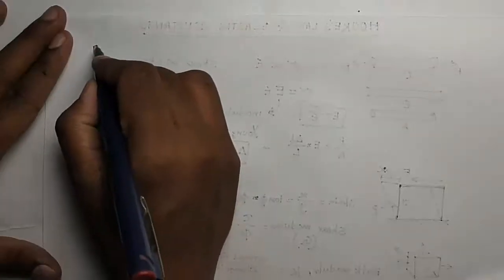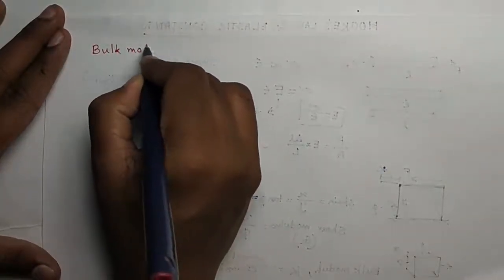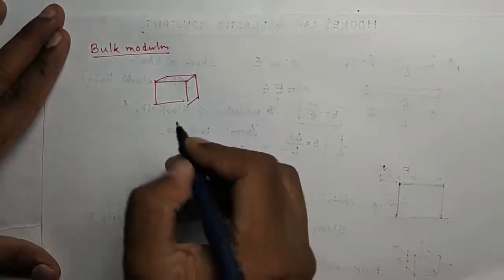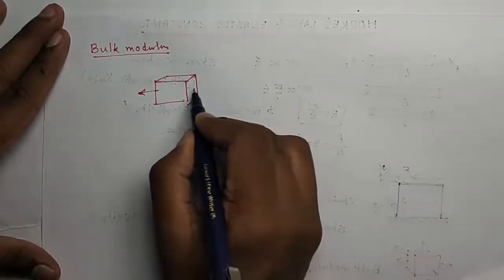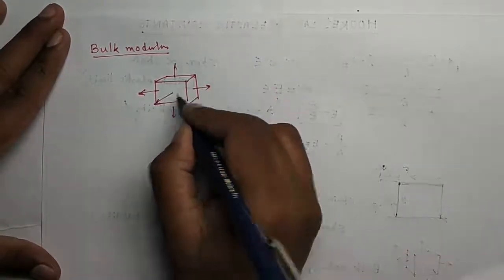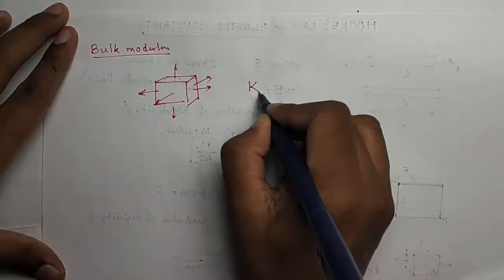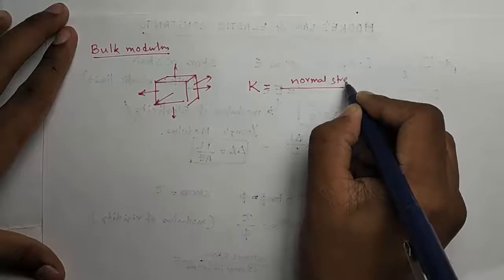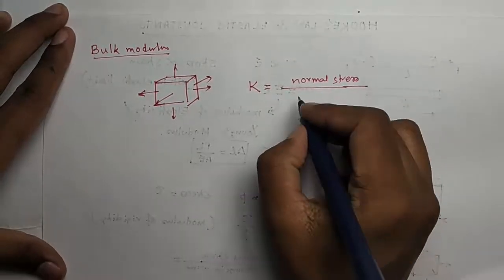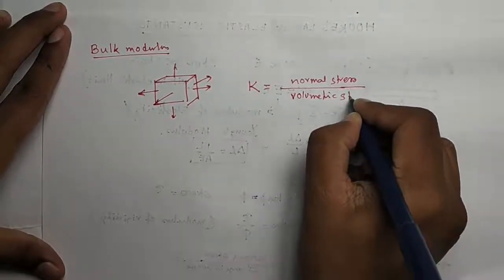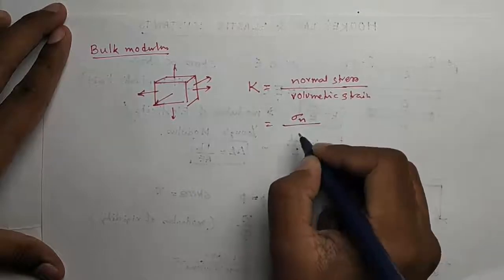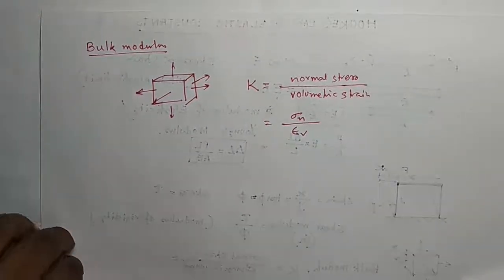Now coming to the third modulus, which is called bulk modulus. There is a three-dimensional body and now you have applied some normal forces in X, Y, Z, all the axes. So this bulk modulus, denoted by K, is normal stress divided by volumetric strain: sigma N, normal stress, by epsilon V. So this is the bulk modulus.